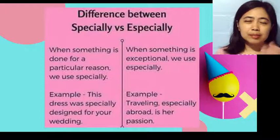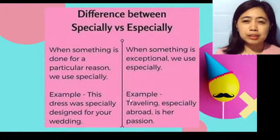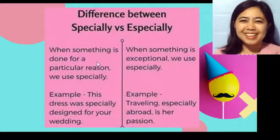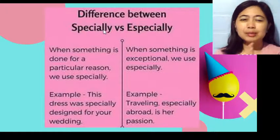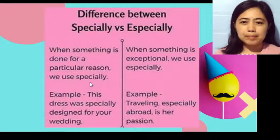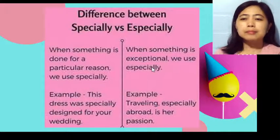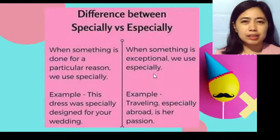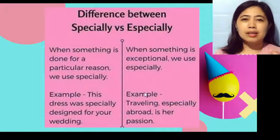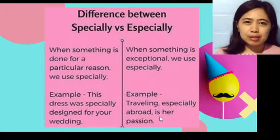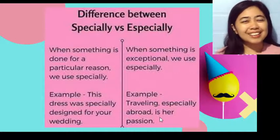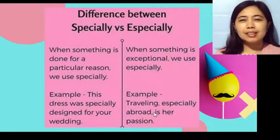Let's have more examples and practice. This additional information is according to Google. So, the difference again: when something is done for a particular reason, we use 'specially' — for example, 'This dress was specially designed for your wedding.' When something is exceptional or stands out, we use 'especially' — for example, 'Traveling, especially abroad, is her passion.'